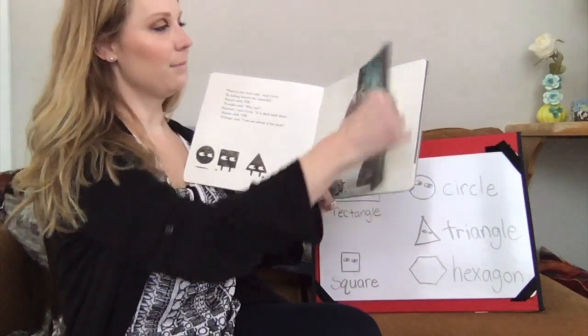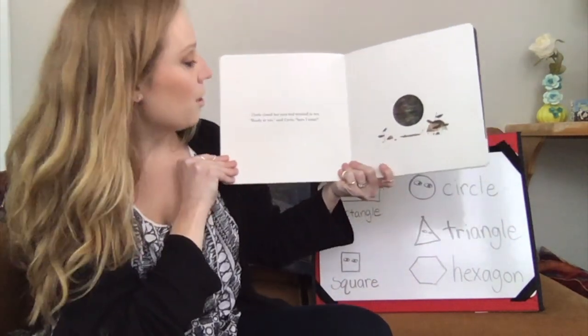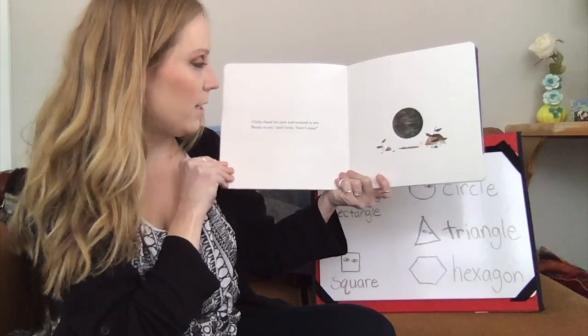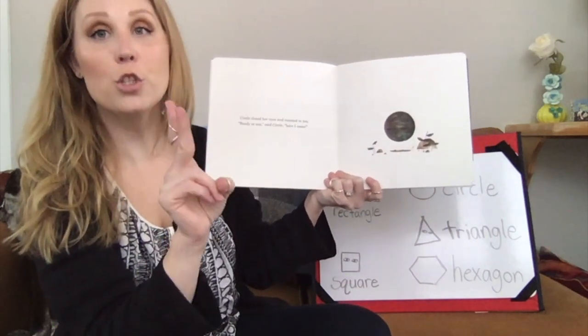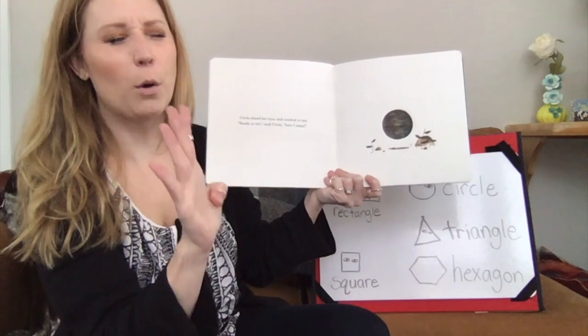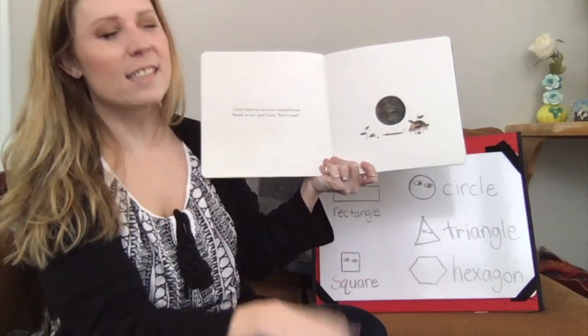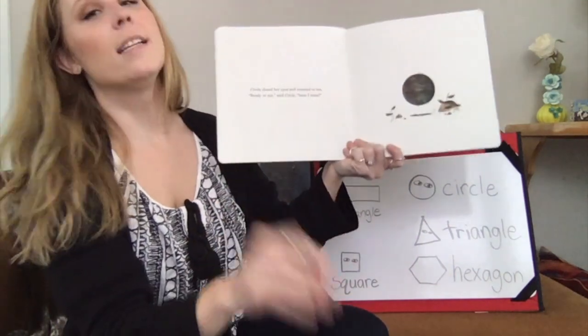It's dark. Circle closed her eyes and counted to ten. One, two, three, four, five, six, seven, eight, nine, ten.